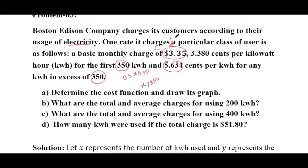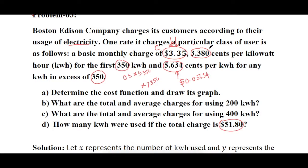One thing you need to understand is that the dollar and cents — this amount is in dollars, and these amounts are given in cents — so you must convert those amounts into dollars. Since one dollar is equal to 100 cents, if you divide the cents by 100 it will convert to dollars.